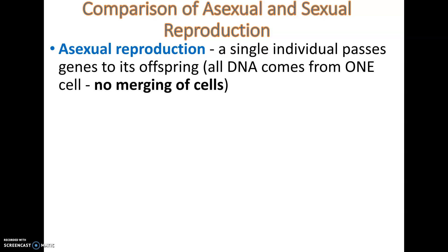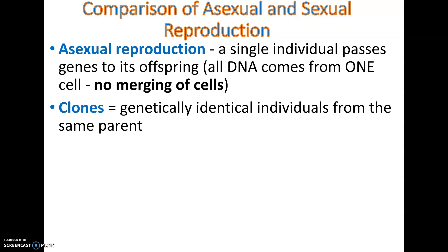Asexual reproduction includes mitosis and binary fission, among other examples. Every genetically identical individual produced from that parent would technically be a clone of that parent.